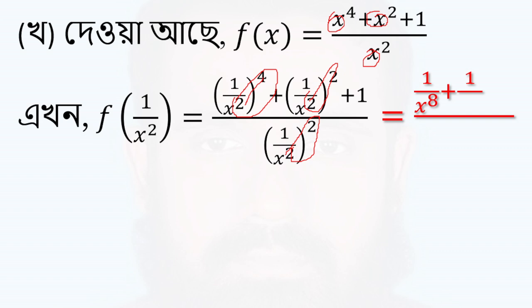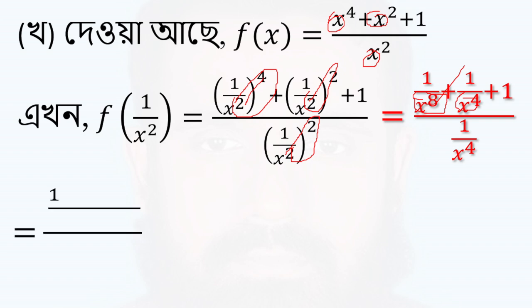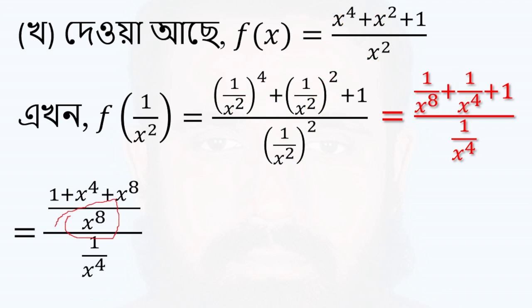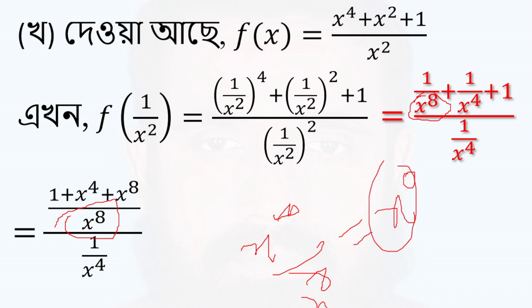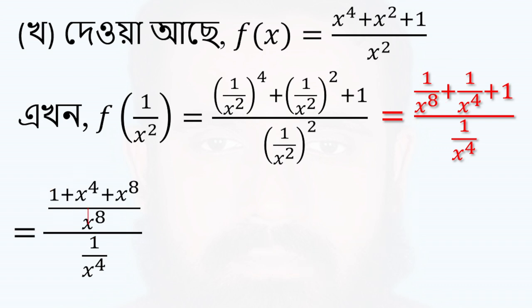So 1 by x to the power 8 plus 1 by x to the power 4 plus 1 by x to the power 4. So x to the power 8 plus x to the power 8 plus 1 by x to the power 8. We will fix x to the power 3, pledging about x to the power 4 and x to the power 0, then equals 1, then equals 6 times 1.